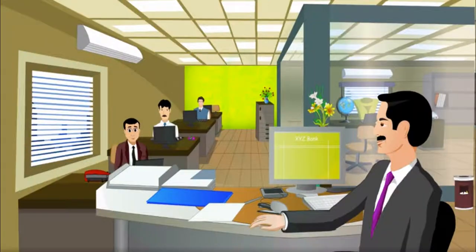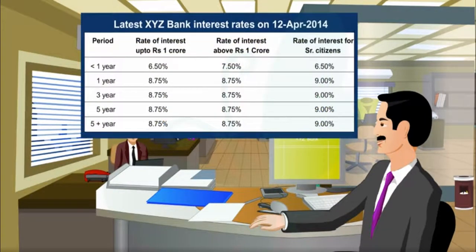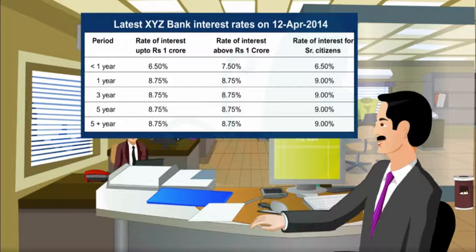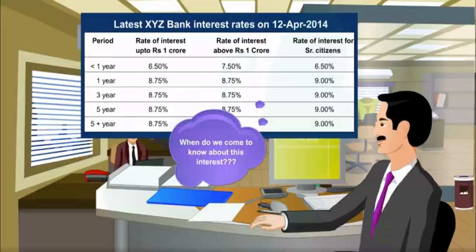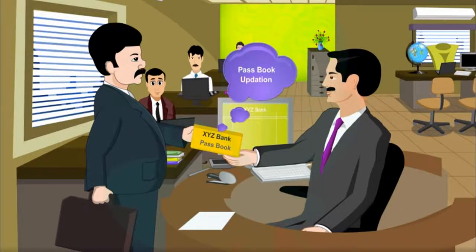Let's take another example. We all know that bank provides interest on our deposits. Now, when do we come to know about it? Exactly, when we go to the bank for updating our pass book. Thus, until this time, the two books reflect different balances.